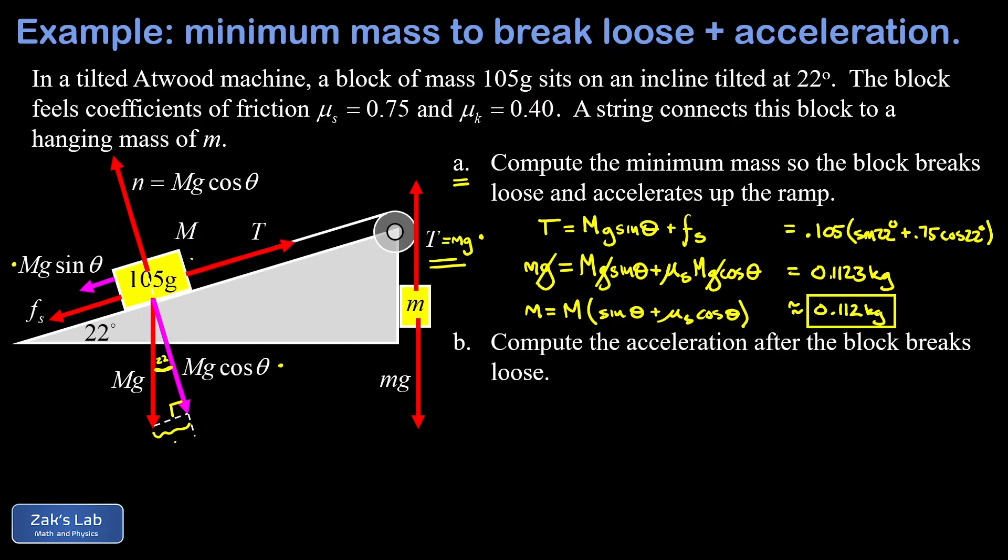So a couple things are changing in our diagram. First, the tension must be less than little mg now. And I know this because the mass little m, the hanging mass, is going to accelerate downward when this thing begins to go. And that means mg must be bigger than the tension pulling up.